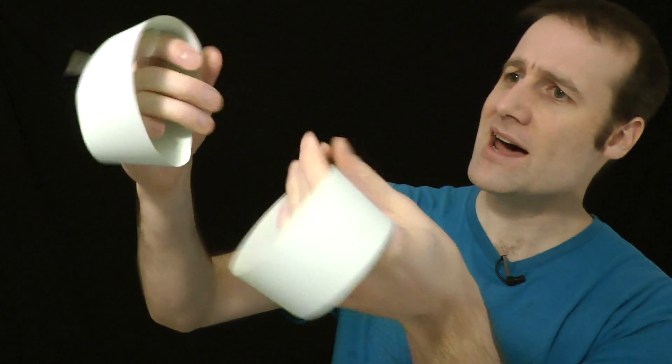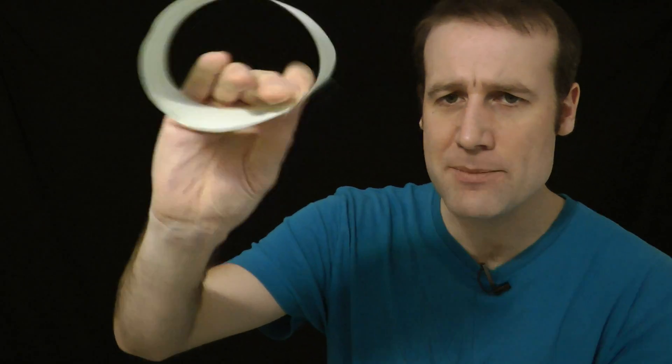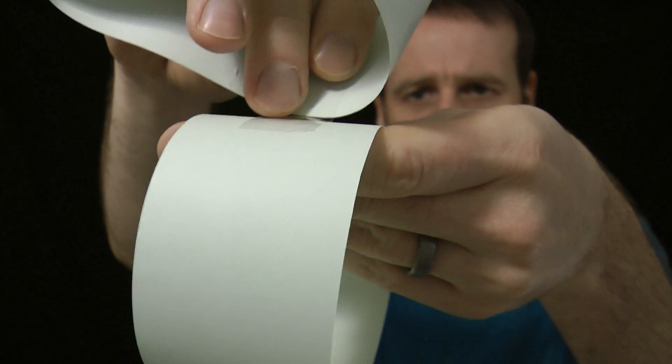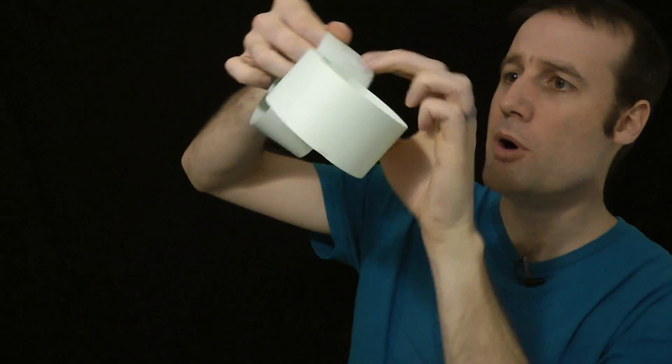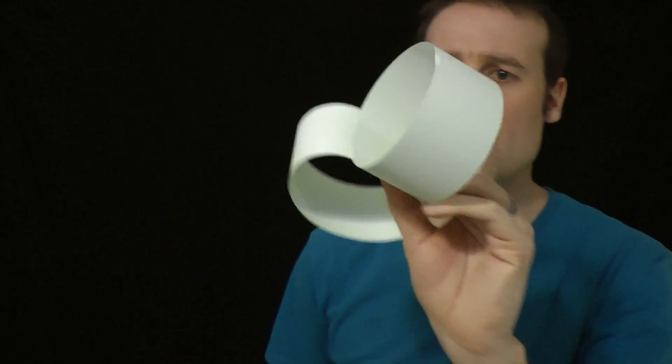Here I have another zero twist cylinder with some tape on it. I'm going to stick it to the first one, so that they are at right angles to each other, so one of them goes that way, one goes that way, it's two perpendicular loops of paper.